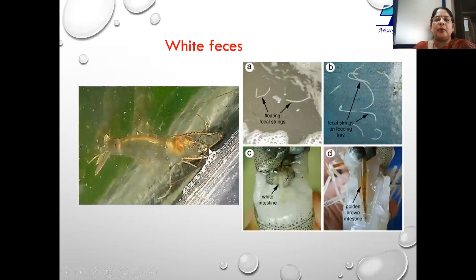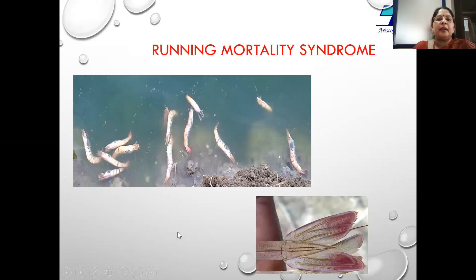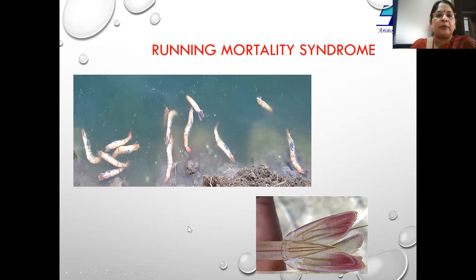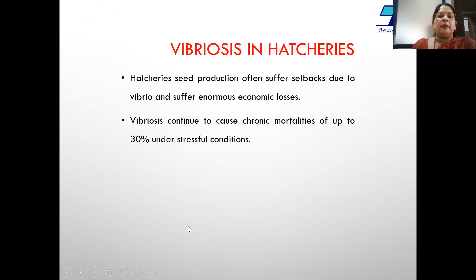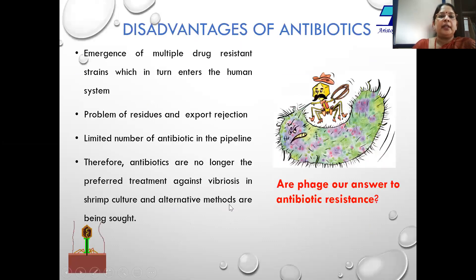Vibrio is one of the major causative agents for white fecal syndrome. This is the appearance of the pond where we can see floating white pieces. Another problem caused by vibriosis is running mortality syndrome, which also causes production losses in shrimp aquaculture. Vibriosis also causes huge mortalities in hatcheries — the cumulative mortalities can go up to 30 percent under stressful conditions.